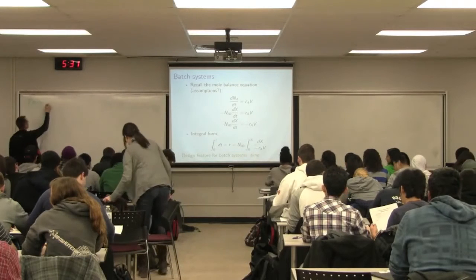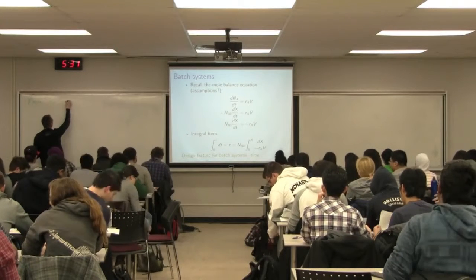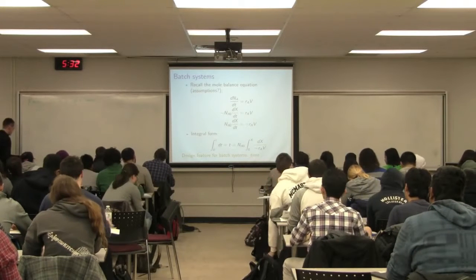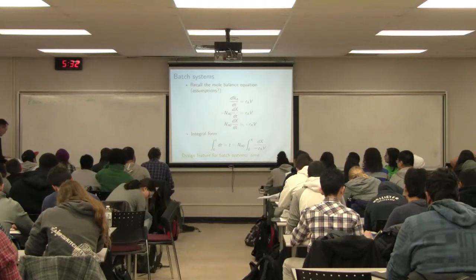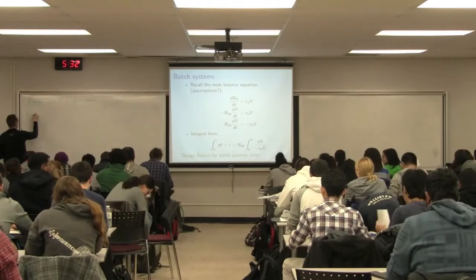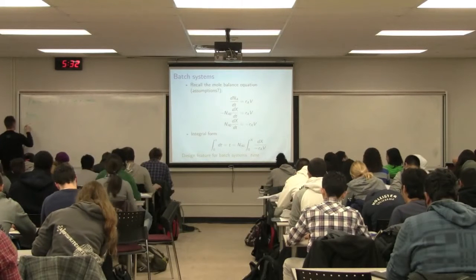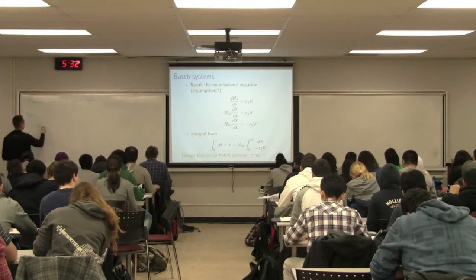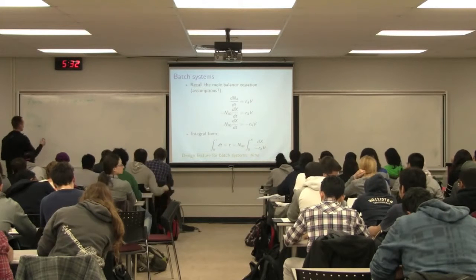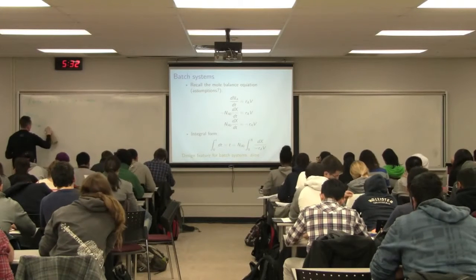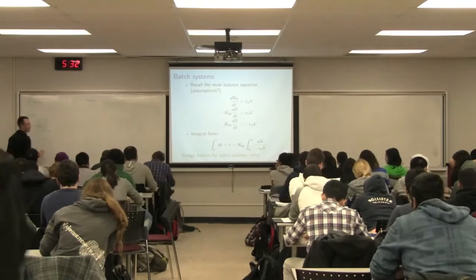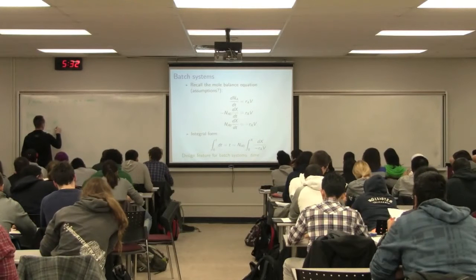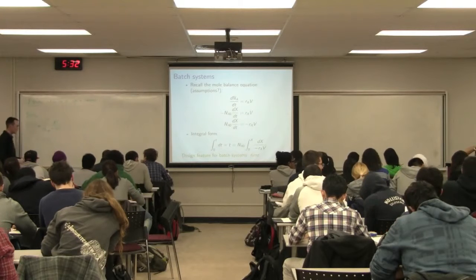The main aim was how to size the reactor. For a batch system, the time is equal to the number of moles added to the reactor initially, NA0, and we integrate from initial conversion to the final conversion X. That was for a batch system.